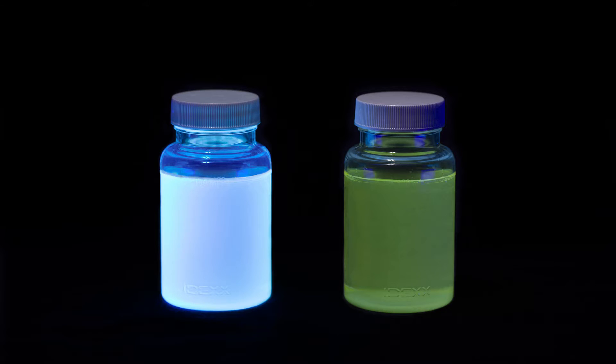After incubation, view the sample under UV light in a dark environment. Shine the light away from your eyes. Keep the light within 5 inches of the sample. Any blue fluorescence means a confirmed positive for enterococci. The intensity of the fluorescence does not reflect sample concentration. In this example, the right sample is negative and the left is positive.